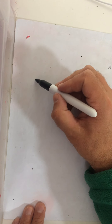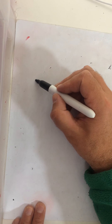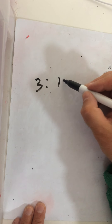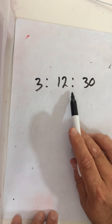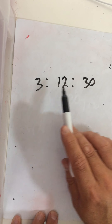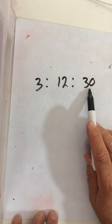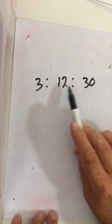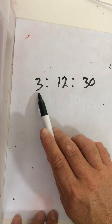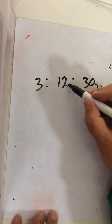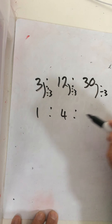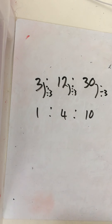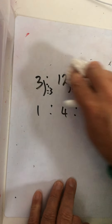We could have a three-part ratio: three, twelve, and thirty. This could be the colours of cars — for every three yellow cars there are twelve red cars and thirty silver cars. Can we simplify this? What goes into all of these numbers? Three goes into them all. So divide each number by three: three into three once, three into twelve four times, three into thirty ten times. The simplest form would be one to four to ten.